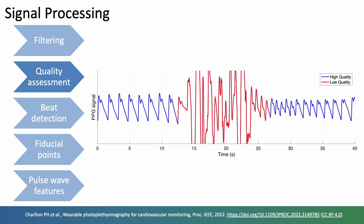Having filtered the signal, we can assess its quality to identify high quality periods suitable for analysis. So here is shown a 40 second period of signal with a low quality segment in the middle shown in red, and we might decide to use the high quality segment shown in blue for our analysis.